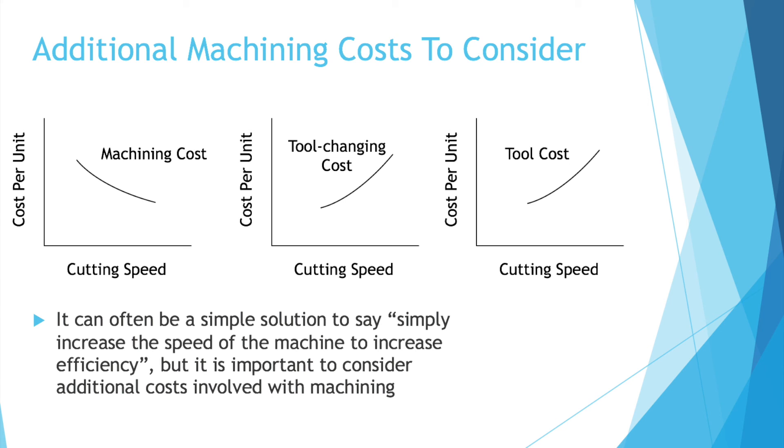Look at that first graph on the left. I think that is the idea that many people have in their heads with machining. You think, as we increase our cutting speed, our cost per unit is going to go down. That machining cost is going to decrease because it's quicker. While that may be true, let's look at the other two graphs and consider what additional costs there may be.